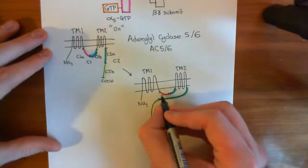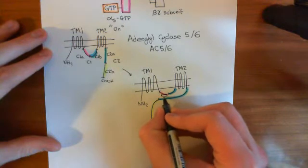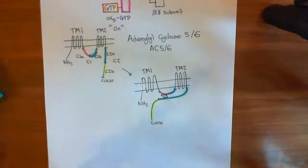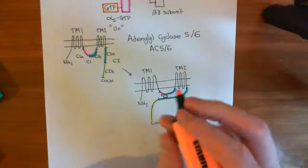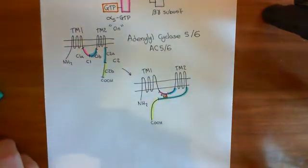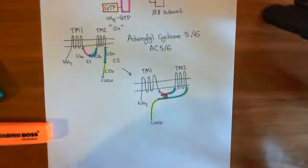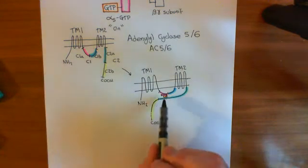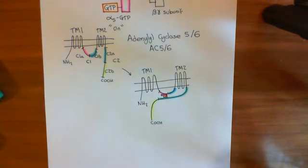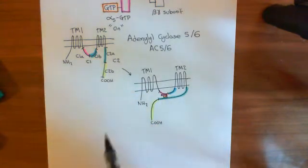And now I'll just try to draw the alpha-S GTP subunit here, so I'll just colour them in so that it looks convincing. So there's the GTP in orange, and here in purple, which is unfortunate because that's the same colour as the C1A, is the alpha-S subunit. So basically the alpha-S GTP subunit binds to both of these domains and pulls them together so that they can dimerise and form an active enzyme.